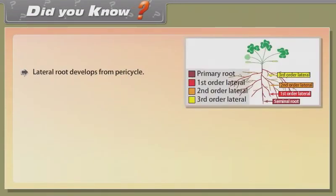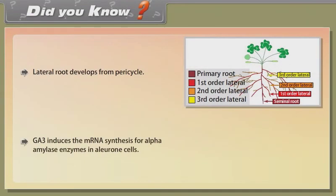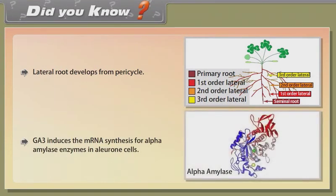Did you know: lateral root develops from pericycle. GA3 induces the mRNA synthesis for alpha-amylase enzymes in aleurone cells.